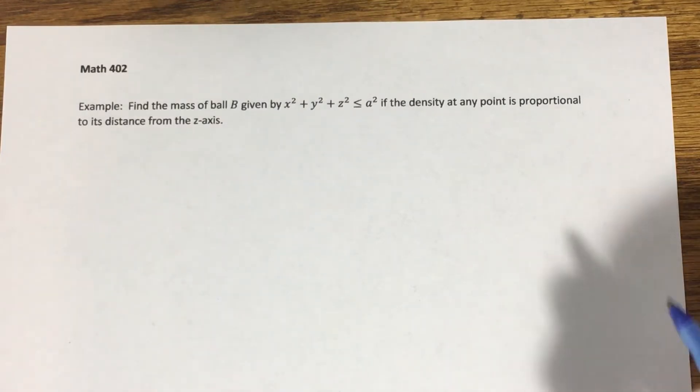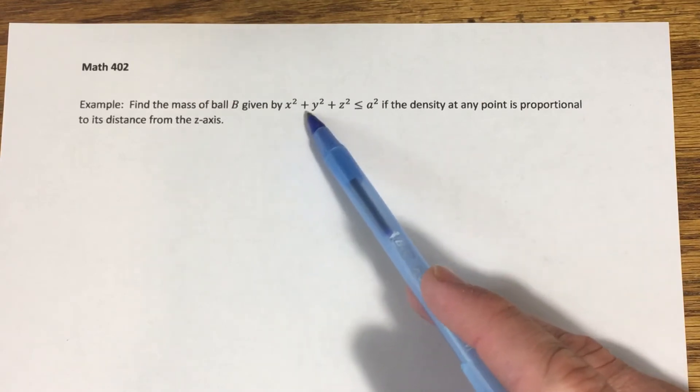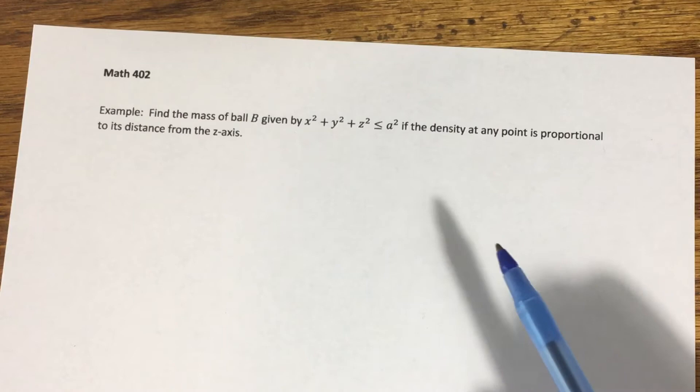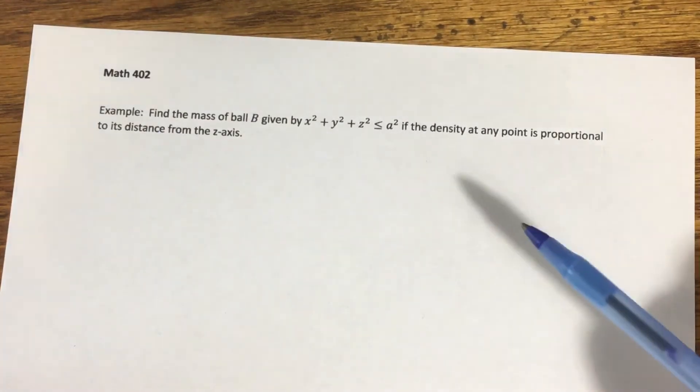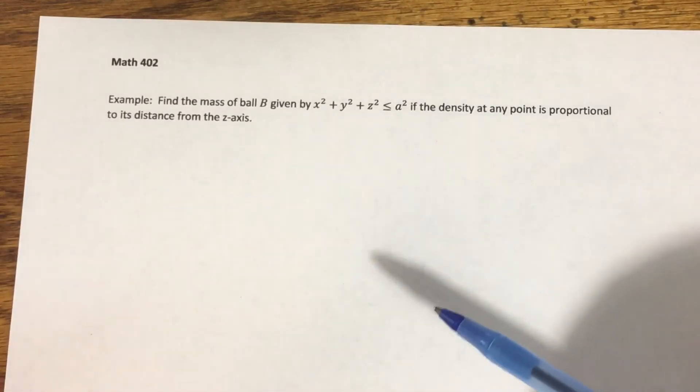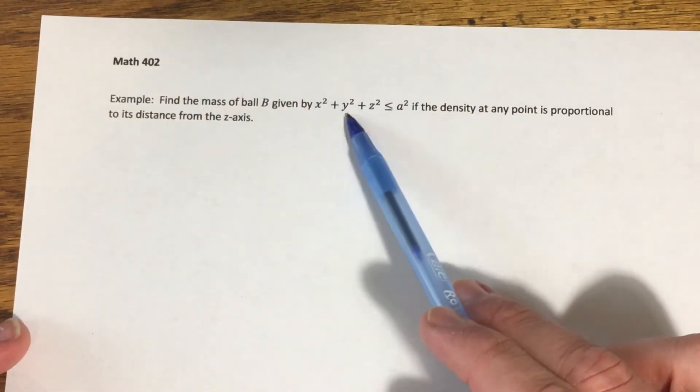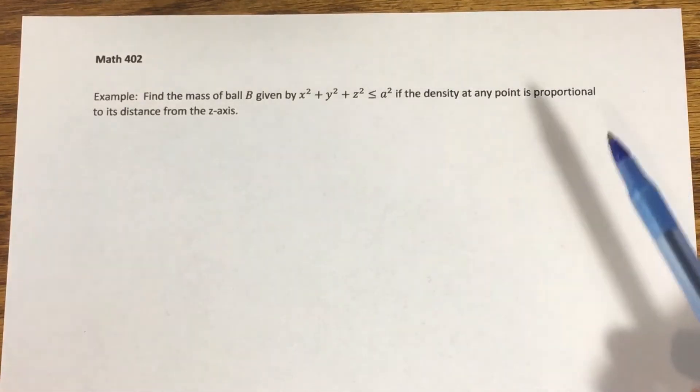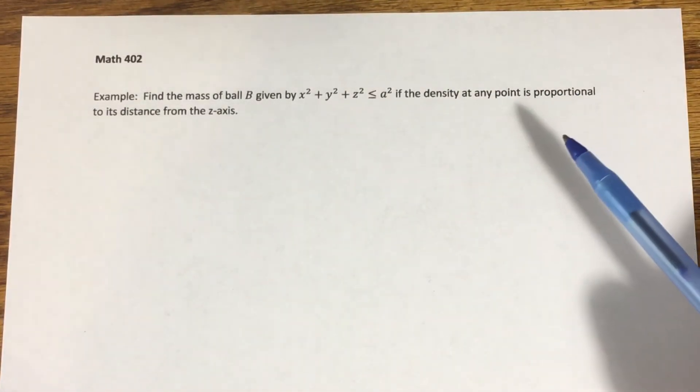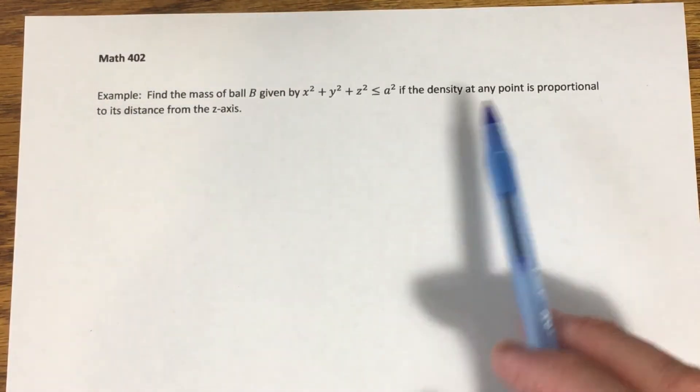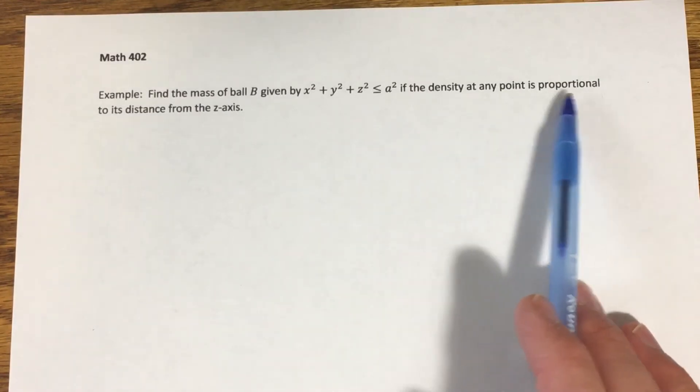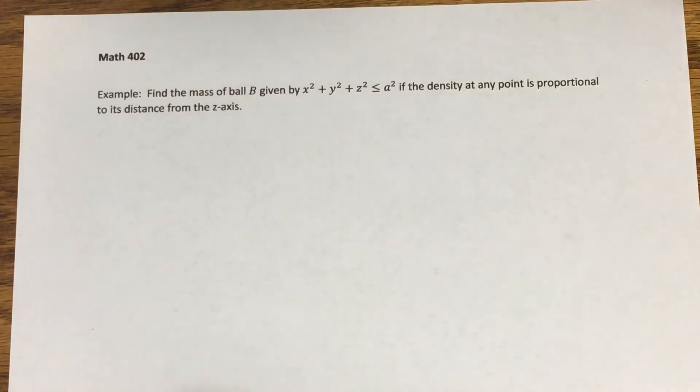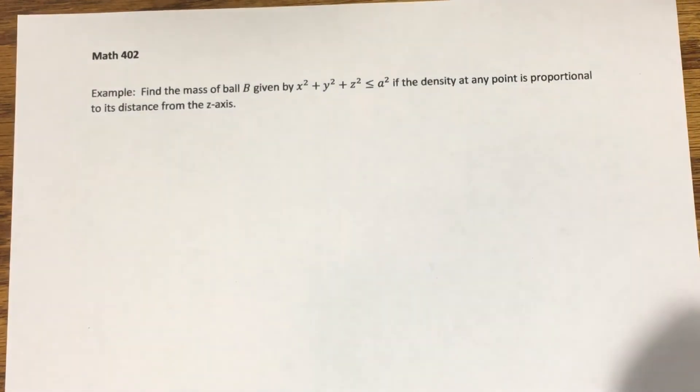We're asked to find the mass of a ball B that's given by this description: x squared plus y squared plus z squared is less than or equal to a squared, if the density at any point is proportional to its distance from the z axis. In the next section, we're going to talk about spherical coordinates. And usually, an indicator that you want to convert to spherical coordinates is if you see an x squared plus y squared plus z squared present in the description of your solid region. We don't know anything about spherical coordinates yet, so I don't get to use that. In fact, cylindrical coordinates are actually good here for a different reason. It actually has to do with the integrand. Notice it says the density at any point is proportional to its distance from the z axis. That's what r represents in cylindrical coordinates. For any point, it's the distance between that point and the z axis specifically. So that part is what makes this problem well-suited for cylindrical coordinates.